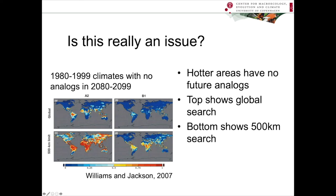However, if you look with a 500-kilometer limit — asking whether there is an analog habitat within 500 kilometers of a particular cell — the answer is much more dire. Especially for A2, a much more extreme climate change scenario, many fewer things are going to have analog climates close by. So it's potentially a problem for species. Even under B1, a much less extreme scenario, you can see that especially in the tropics, analog habitats tend to disappear.